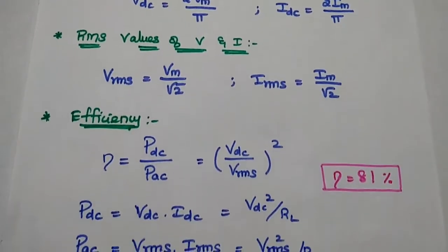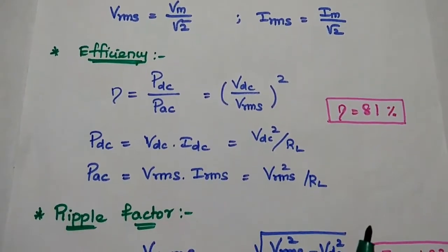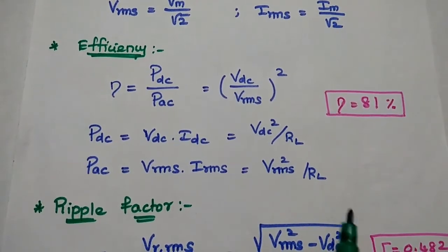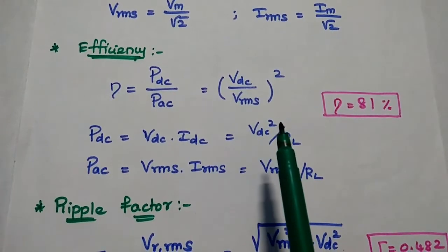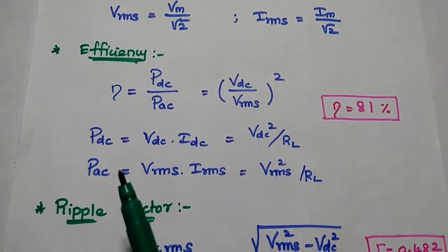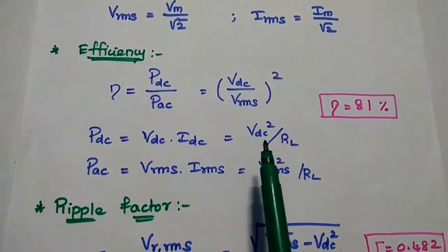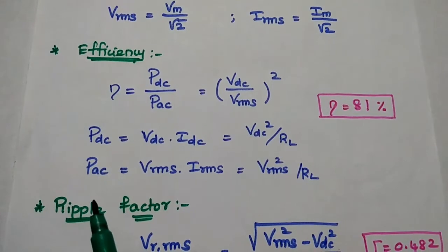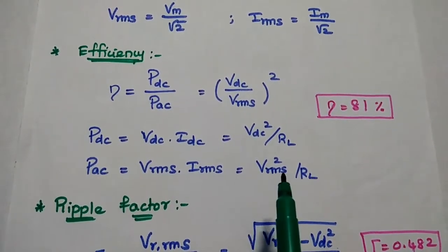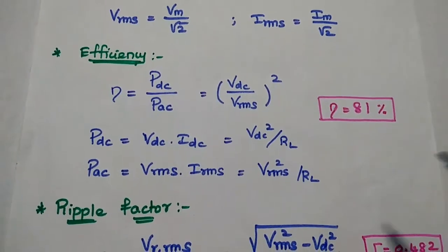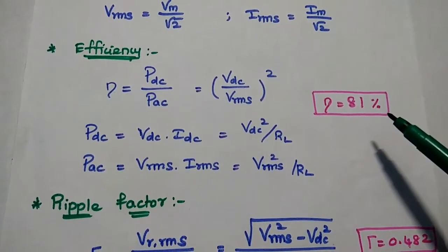The next one is efficiency. It is defined as the ratio of the DC output power to the AC input power. It can also be represented as (Vdc/Vrms)². The DC output power equals Vdc × Idc or Vdc²/RL, and the AC input power equals Vrms × Irms or Vrms²/RL. In a full wave rectifier, the efficiency is always around 81%.